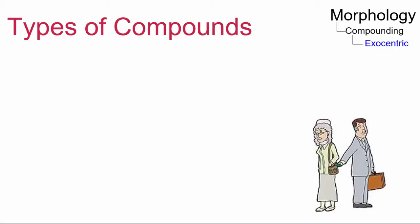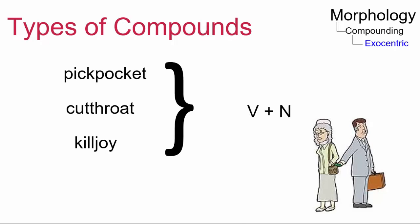Another type of exocentric compound consists of a verb modifier and a noun head. For example, pickpocket, cutthroat, killjoy. These compounds are rare and the pattern is unproductive.